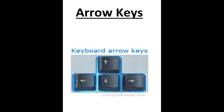The last special key is arrow keys. Arrow keys are of four types, and are used to move the cursor towards left, right, up, or down — you can see on the screen. So children, I hope all these keys are clear to you. Thank you and God bless you.